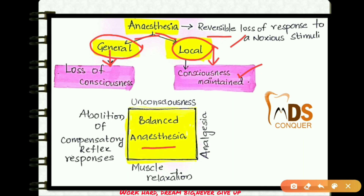There is a term called balanced anesthesia. To call it balanced anesthesia, four things must be present: unconsciousness, analgesia, muscle relaxation, and abolition of compensatory reflex responses. If these four things are present, then it is called balanced anesthesia.